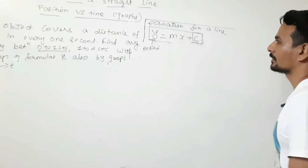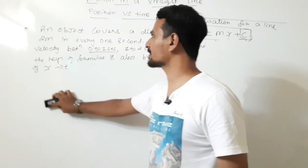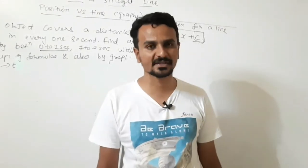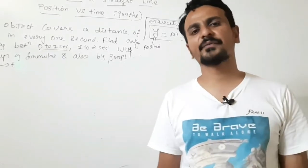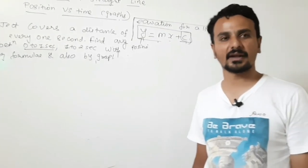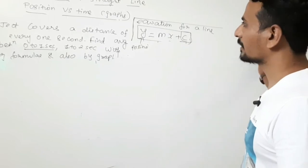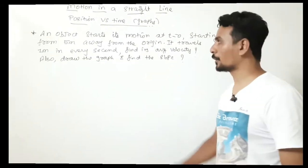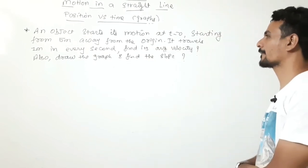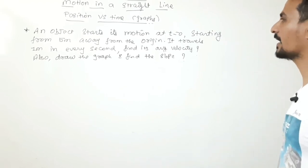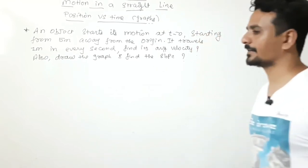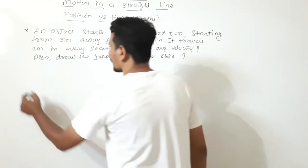The object in that question was traveling uniformly — velocity was constant, representing uniform motion. Now what if the motion is not uniform? An object starts its motion at t = 0, starting from 5 meters away from the origin, and it travels 1 meter toward the origin in every second. Find its average velocity, draw the graph of x vs t, and find the slope.